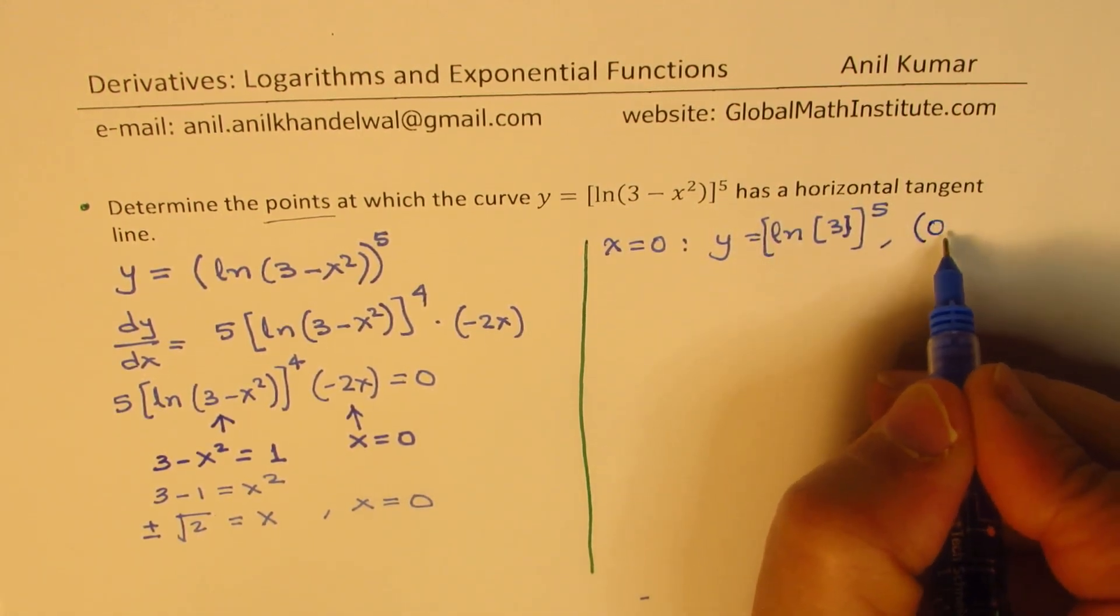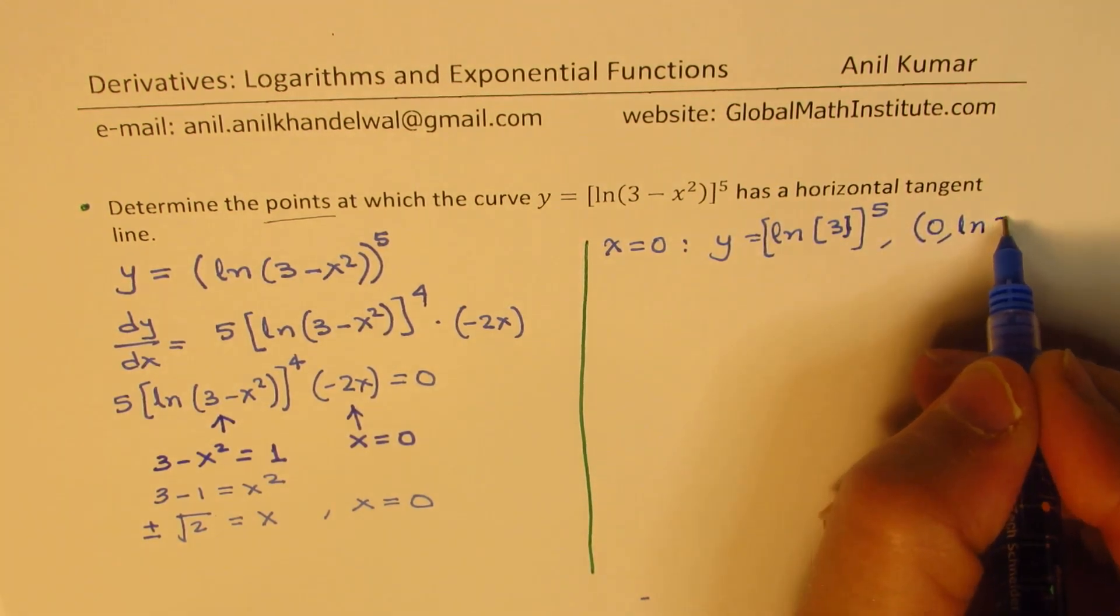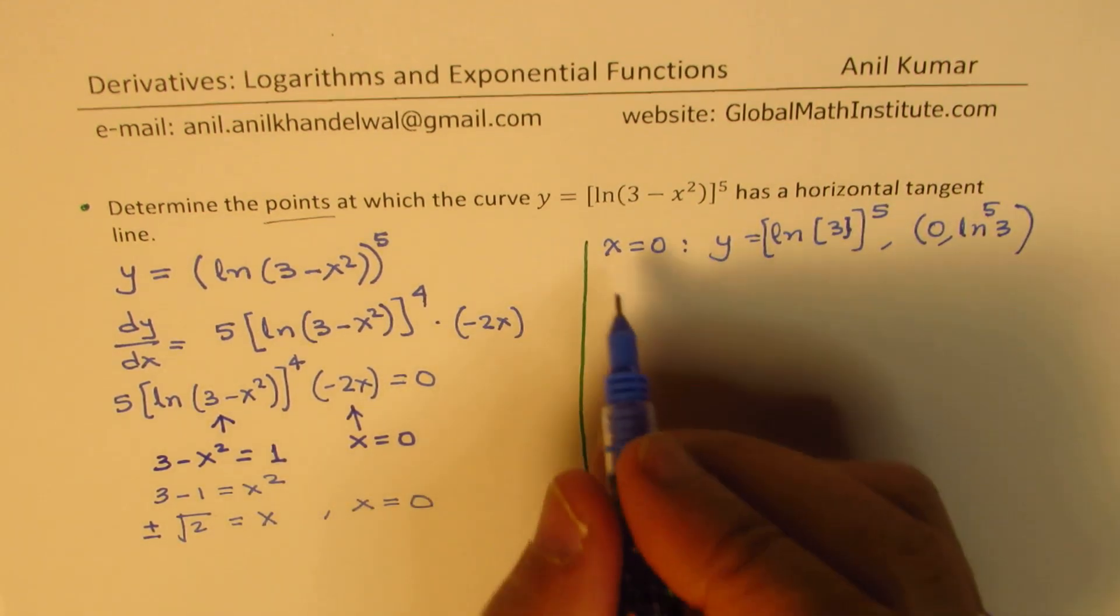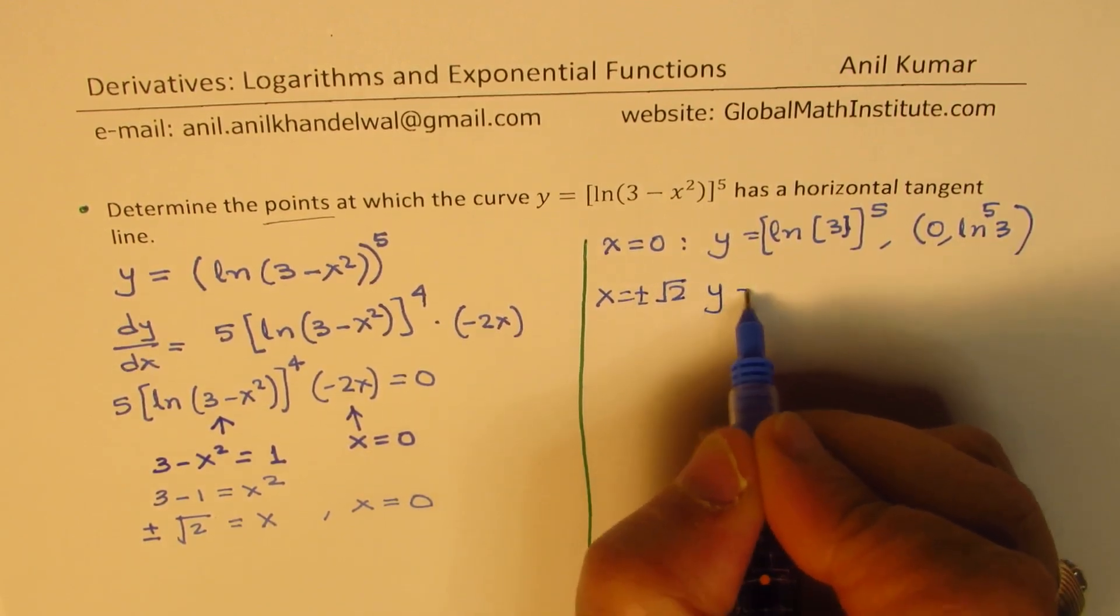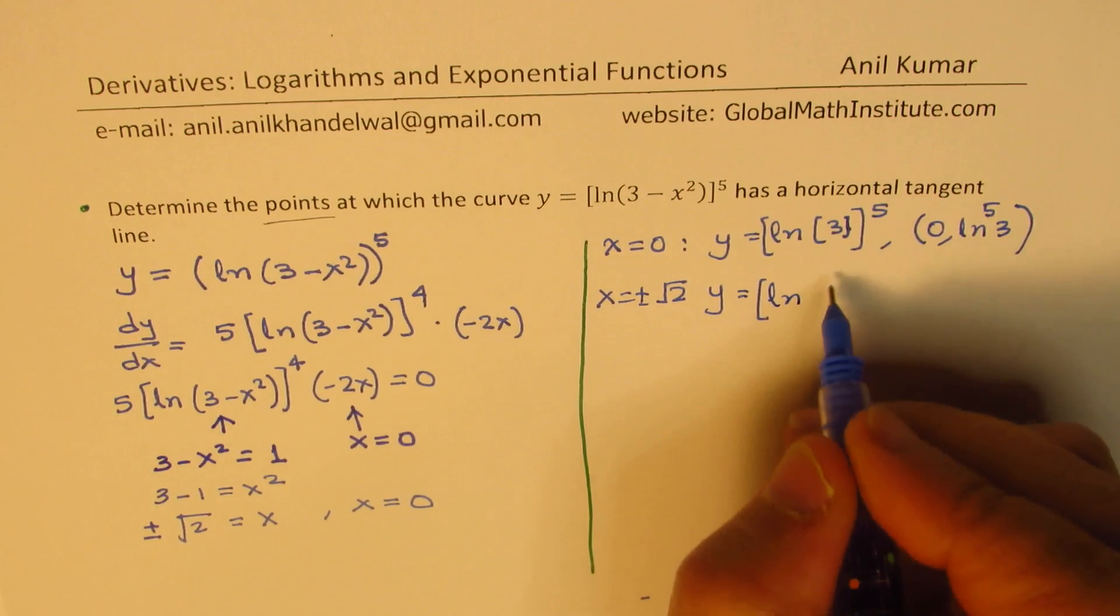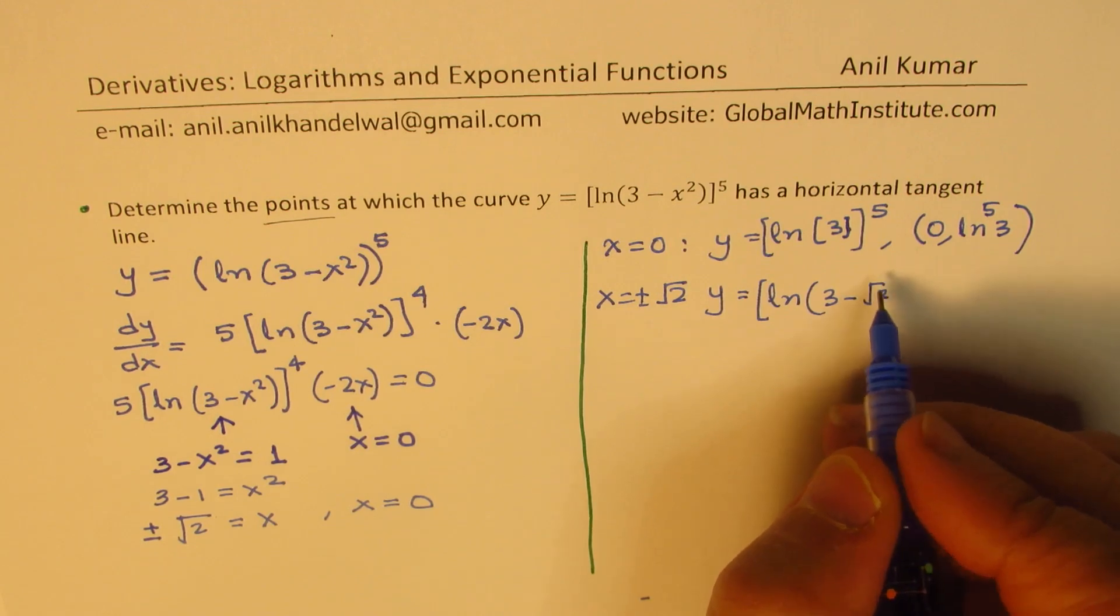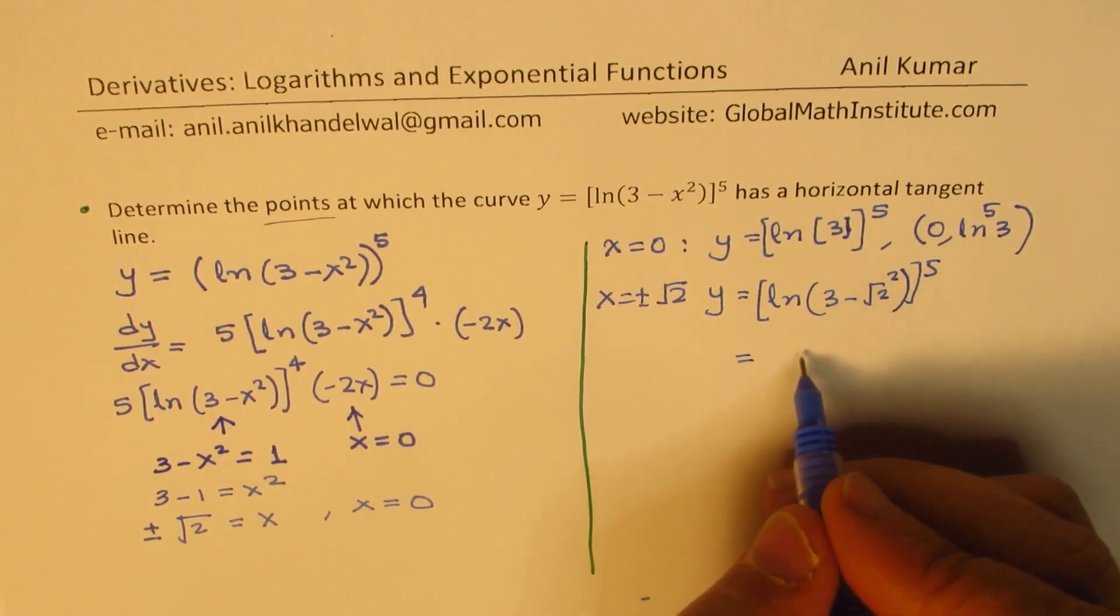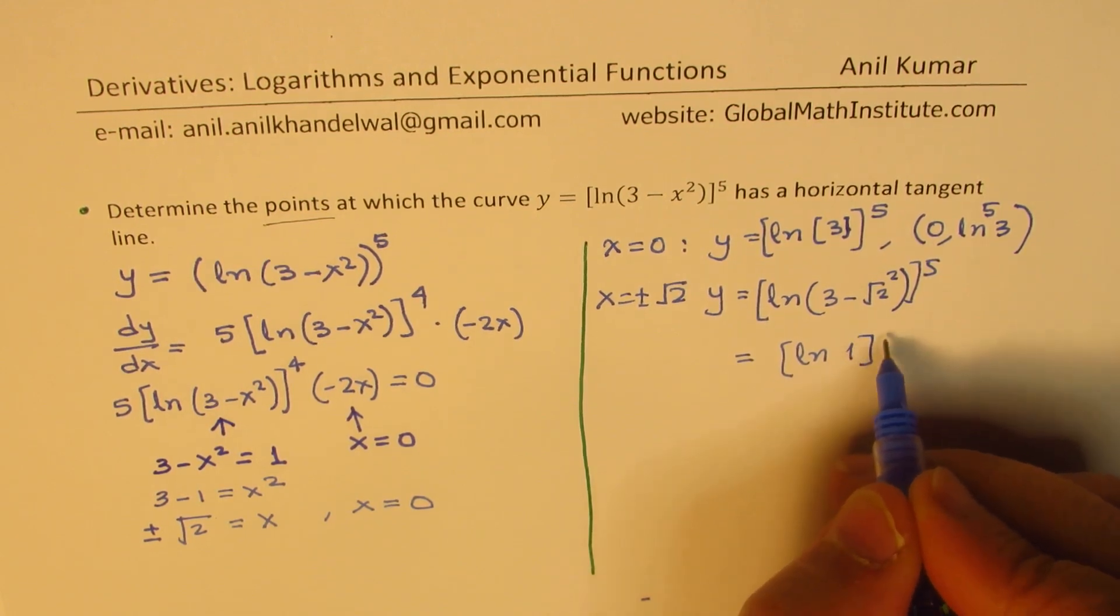So that's what we get. We have one point which is 0 and that's the y value: ln 3 to the power of 5. Now for x equals plus or minus square root of 2, we get y equals the 5th power of ln of 3 minus 2, which is 1. So it is ln 1 to the power of 5.